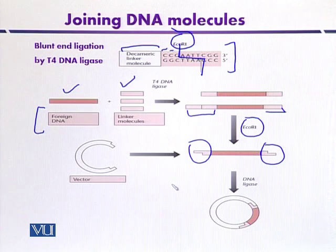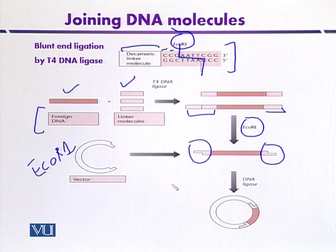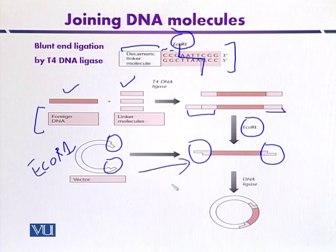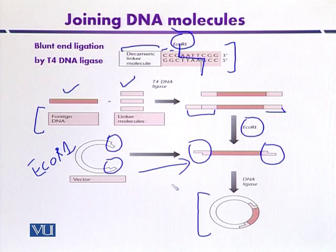The vector is also digested with the same enzyme, EcoR1, so that we can get the same cohesive ends containing AATT cohesive ends. When they are mixed together, we can get a recombinant molecule and DNA ligase can bridge the gaps between the two strands.